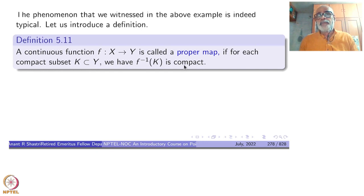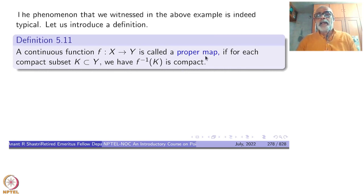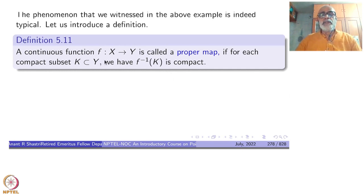For example, quite often in a locally compact space like R^n, a finite-to-one map will be proper, but an infinite-to-one map will not be proper. Proper maps are a kind of tool to study continuous functions from one non-compact space to another non-compact space. The definition says that the inverse image of a compact set is compact.